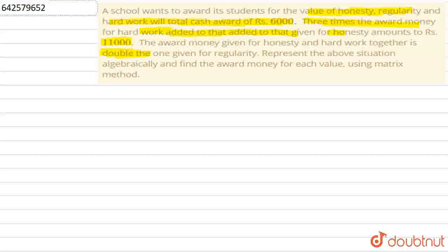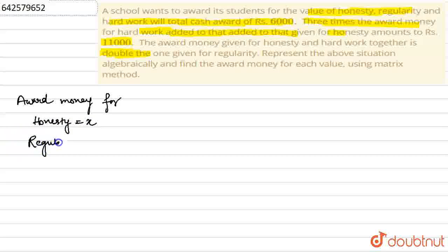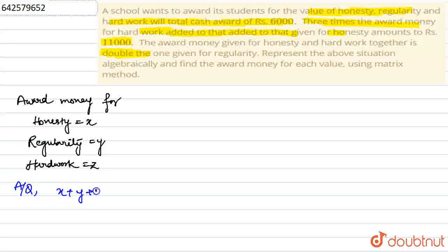First let us represent this algebraically. Let the award money for honesty be x, for regularity be y, and for hard work be z. According to the first condition, x plus y plus z is equal to rupees 6,000, since the total cash award for honesty, regularity, and hard work is rupees 6,000. This is the first equation.